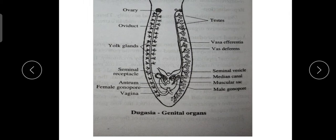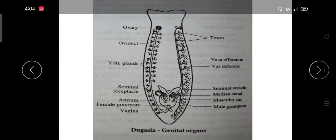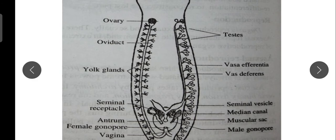The male genital system consists of numerous minute testes on the right and left sides of the body. Each testis is a spherical body formed of germinal epithelium from which biflagellated, long and filamentous spermatozoa are formed. Small sperm ducts or vas deferens originate from the testes.